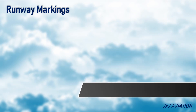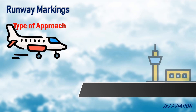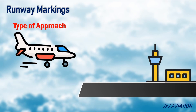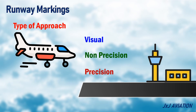Depending on the type of approach that is available at an airport, the runway would have distinct markings. The approaches are classified as visual approach, non-precision instrument approach, and a precision instrument approach. The runway marking elements will increase when we go from a visual runway to a non-precision instrument runway to a precision instrument runway.